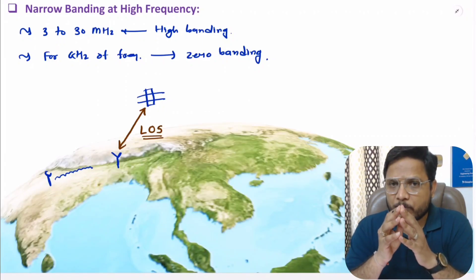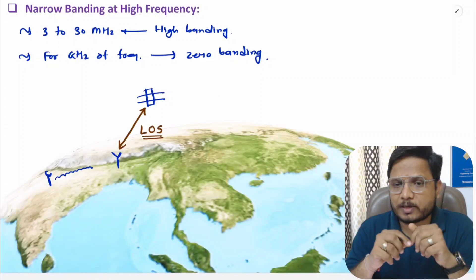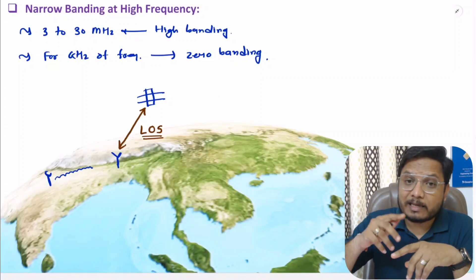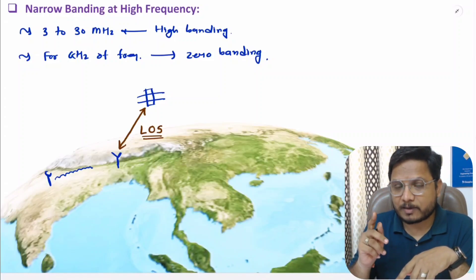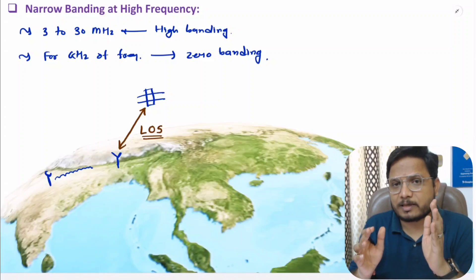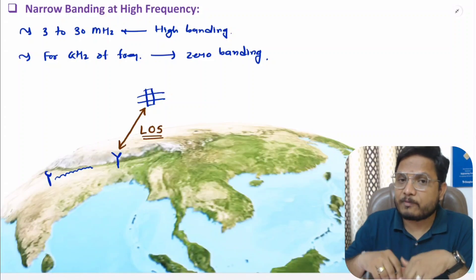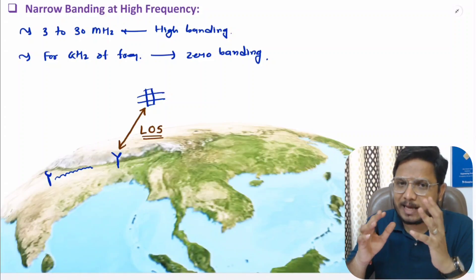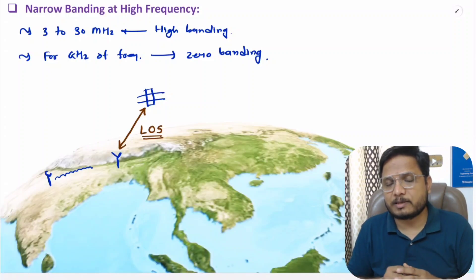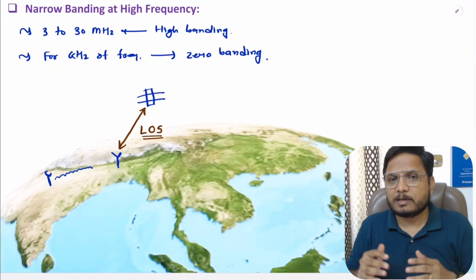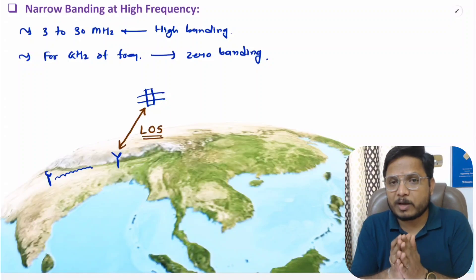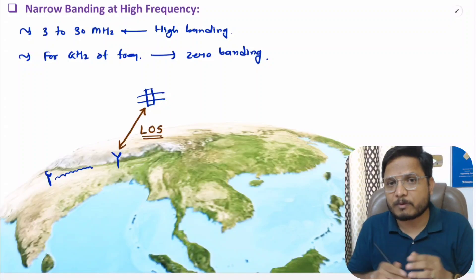So modulation is a process by which we increase the transmission frequency, and due to these higher frequencies after modulation there are many advantages in a communication system. I hope you have enjoyed this. If you have any confusion, please place it in the comment section — I will be happy to help. Thank you so much for watching this video.